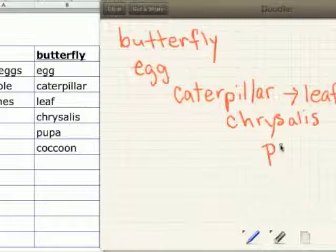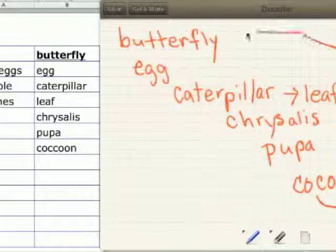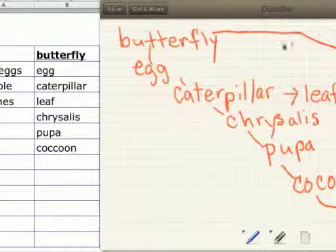The caterpillar becomes a chrysalis. C-H-R-Y-S-A-L-I-S. The chrysalis becomes a pupa. P-U-P-A. And the pupa lives in a cocoon. That's its house. And the cocoon, out of the cocoon comes a beautiful butterfly.